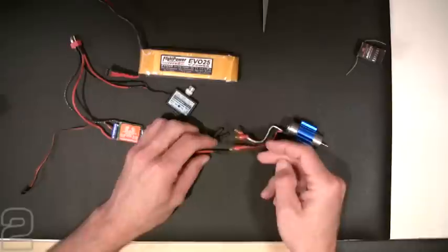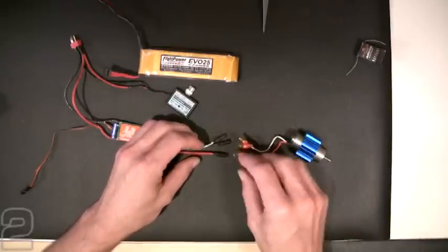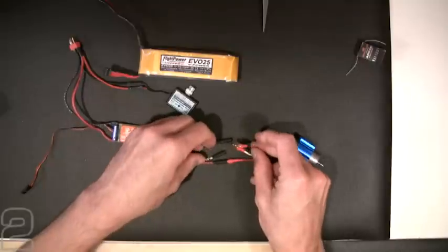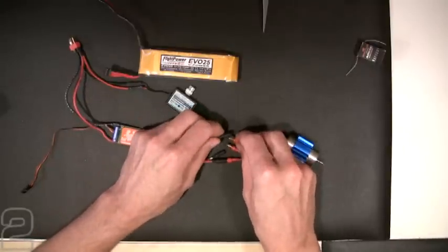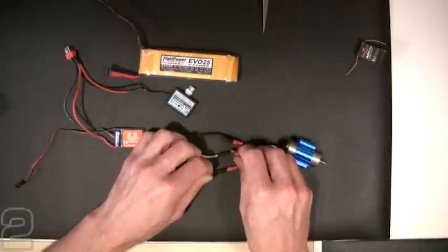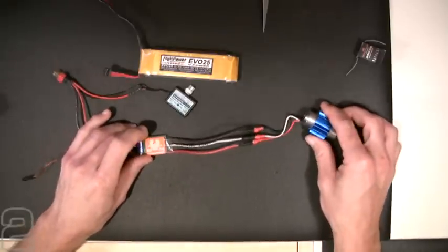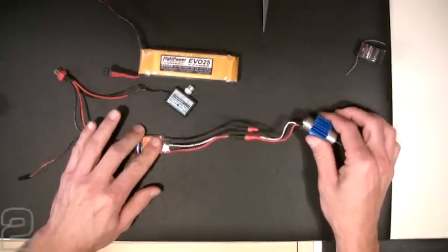So our first connection is, we'll go ahead and follow the color coding sequence on this since we do have red, white, and black being represented. I'll connect my red to my red, my black to my black, and my white to my white. Now my ESC is connected to my brushless DC motor.